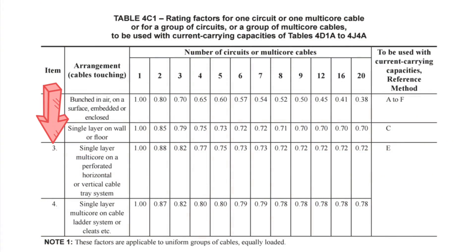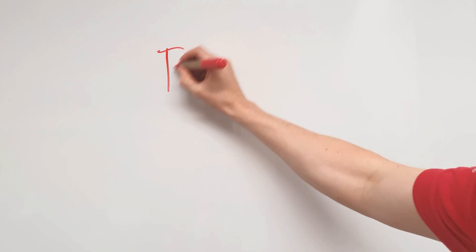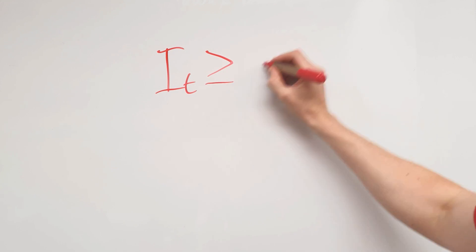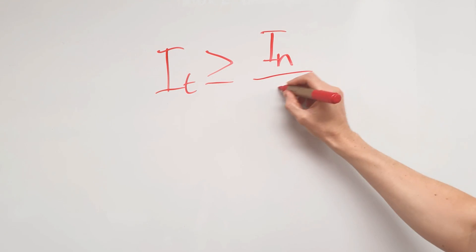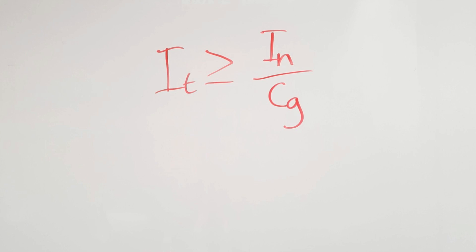...we look at item three of Table 4C1 in the wiring regs and track across to find the column marked eight. Looking at where they intersect, we've got a value of 0.72. Now this factor goes into a calculation that helps us determine conductor size, and it looks like this: It must be greater than or equal to In divided by Cg. In this formula, It is the tabulated value of current that the cable can carry — 'tabulated' just means in a table. In is the nominal rating of the circuit protective device, and Cg is the grouping factor that we just found.